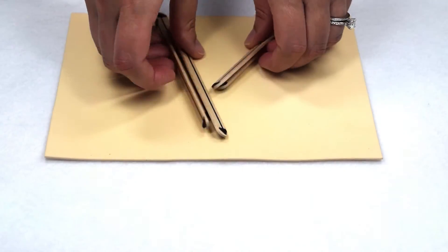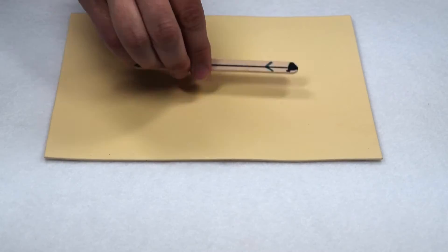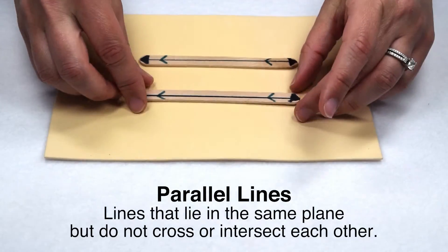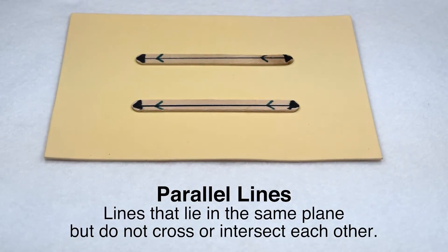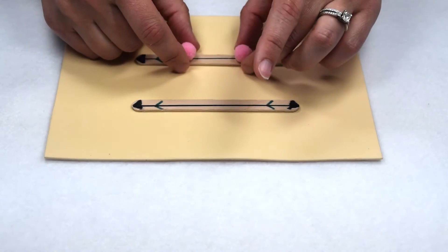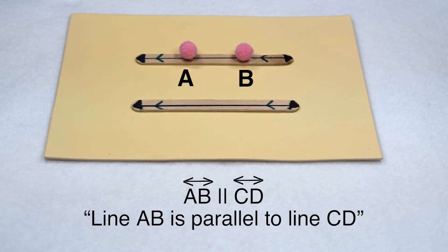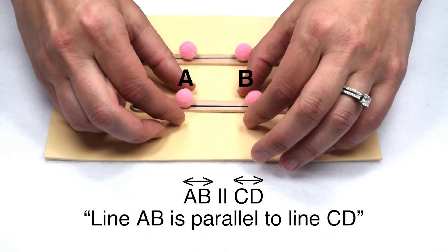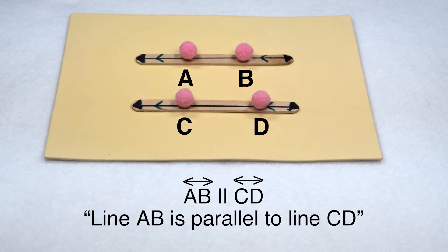Some of these lines have specific properties to them. One set would be parallel lines. Parallel lines are lines that are never going to cross, touch, or intersect with each other. We can show they are parallel with labeling them with feathers on each line. When we write it out symbolically, we can say that line AB is parallel to line CD by using the parallel symbol between line AB and line CD.